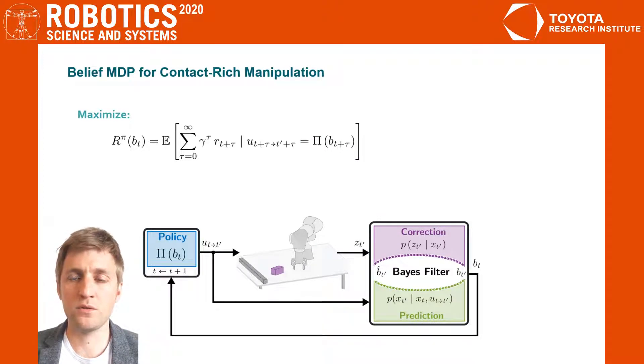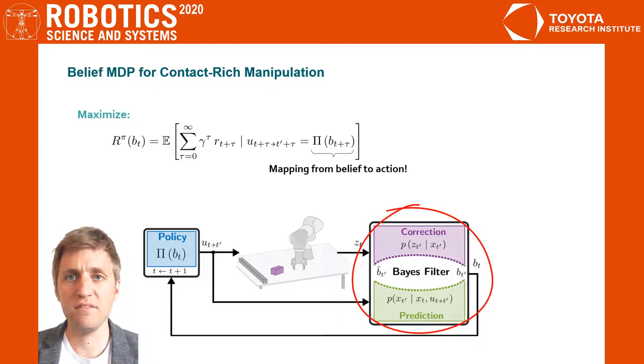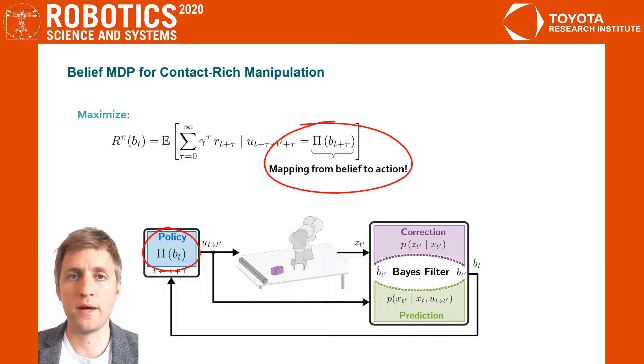The belief MDP consists of two components: a recursive Bayes filter approximation to track the belief and a policy Pi which maps the belief onto a robot command.